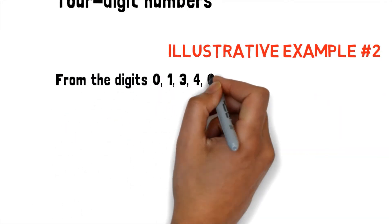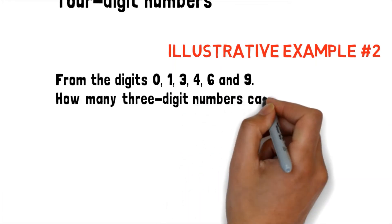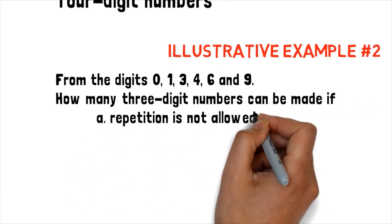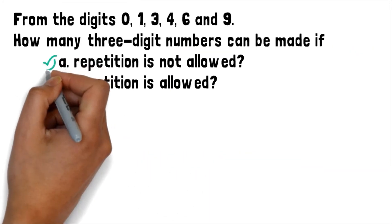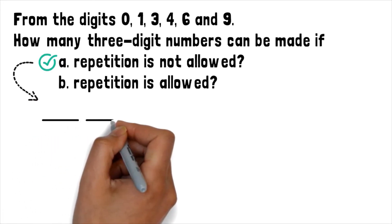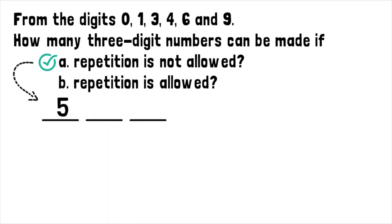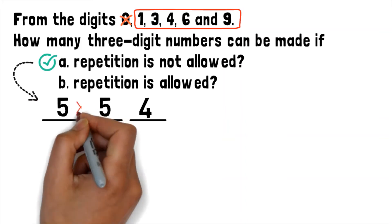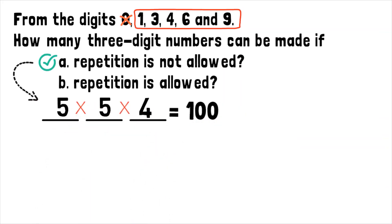Illustrative example number 2: From the digits 0, 1, 3, 4, 6, and 9, how many 3-digit numbers can be made if A) repetition is not allowed? There are 3 positions to be filled, so we draw 3 horizontal marks. After the first mark is filled by a non-zero digit, you have 5 choices for the second mark — the 4 remaining non-zero digits plus zero. Since we can include zero in the second and third positions, there are still 4 choices on the third mark. Multiplying gives a final answer of 100, so there are 100 three-digit numbers.